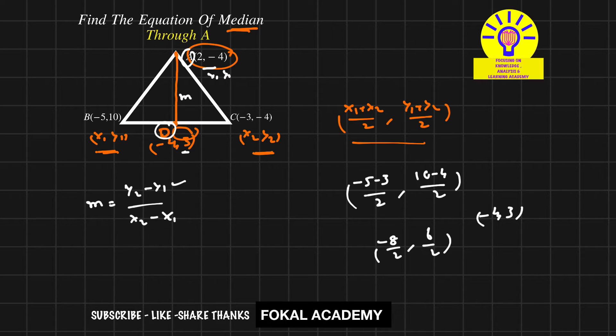Taking A as (x1, y1) and D as (x2, y2), the change in y coordinates is 3 - (-4) divided by -4 - 2. That equals 3 + 4 = 7, divided by -6, so the slope is -7/6.